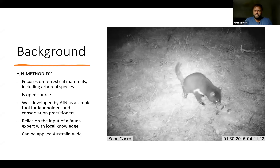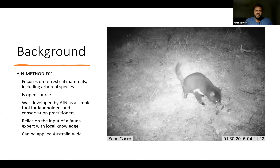The background of this method: it focuses on terrestrial mammal species including arboreal species like possums and gliders, terrestrial species like macropods, and carnivorous species ranging in size from a few hundred grams up to tens of kilograms. The method is available for anyone to use free of charge. It's designed to be a fairly simple tool for landholders, conservation practitioners, and environmental scientists to assess the condition of a mammal assemblage on a property or project, largely reliant on wildlife cameras.